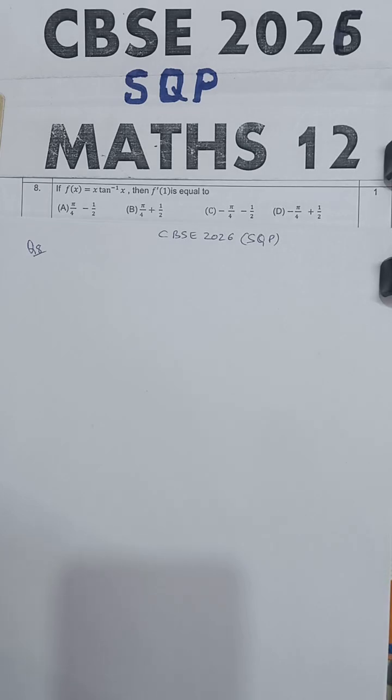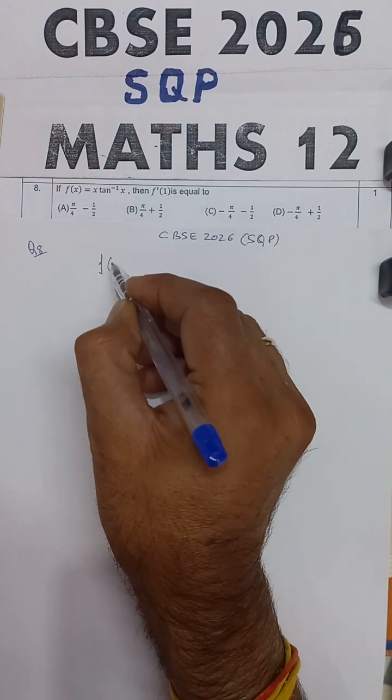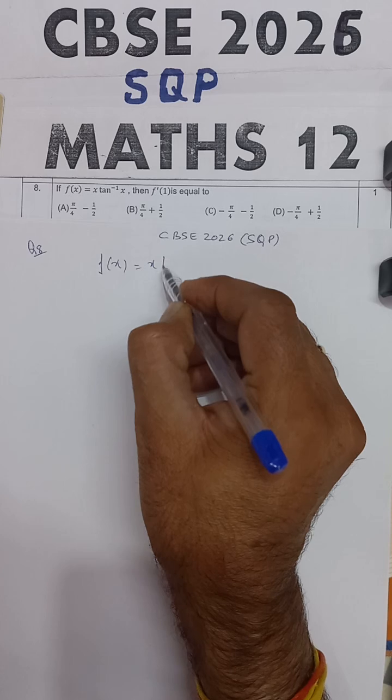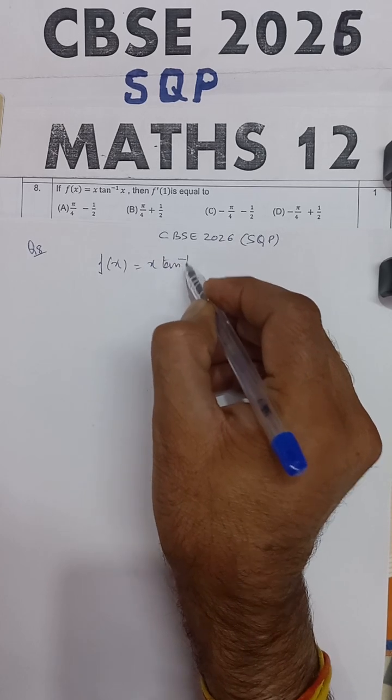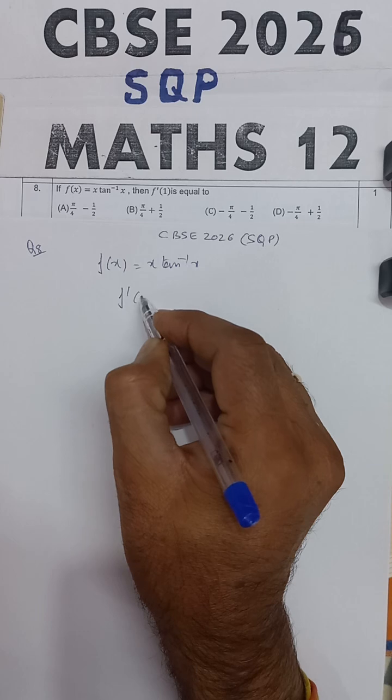This question is from the math sample question paper issued by CBSE for 2026 board examination. The problem states: if f(x) equals x tan inverse x, then find f dash 1. You have to find out the value of f dash 1.